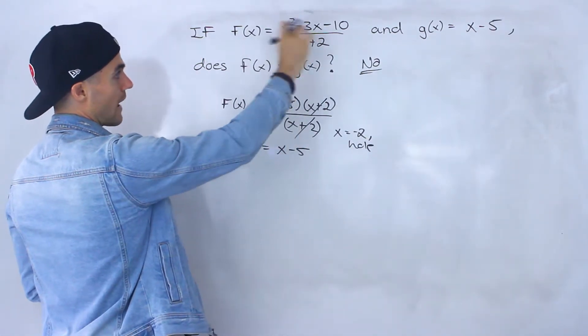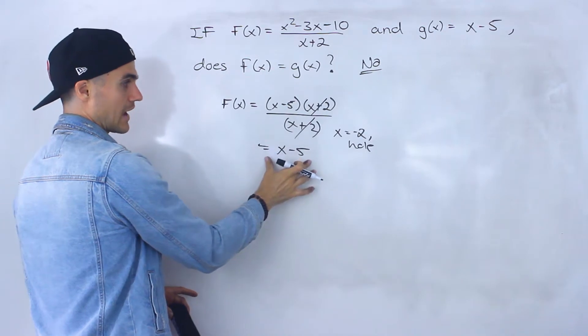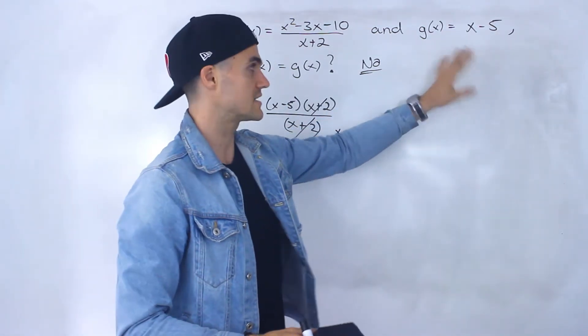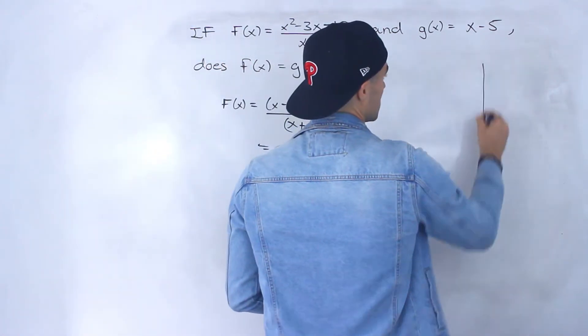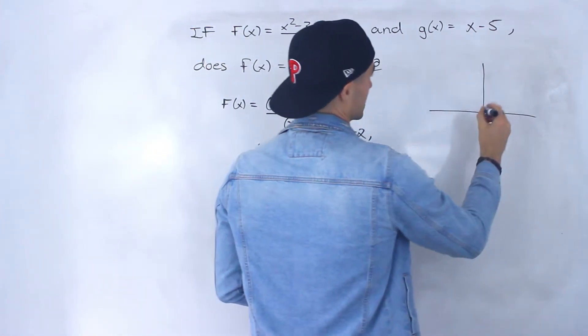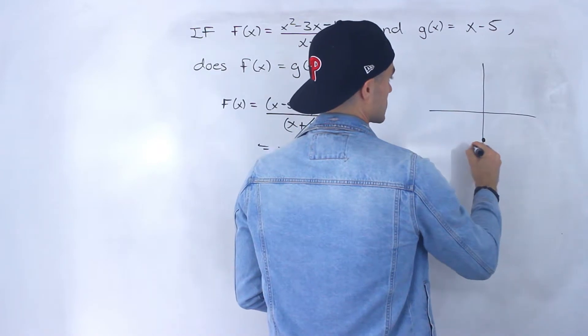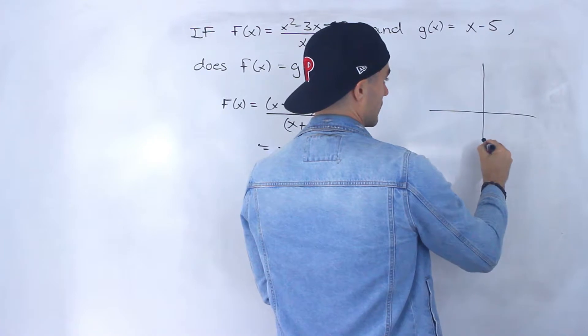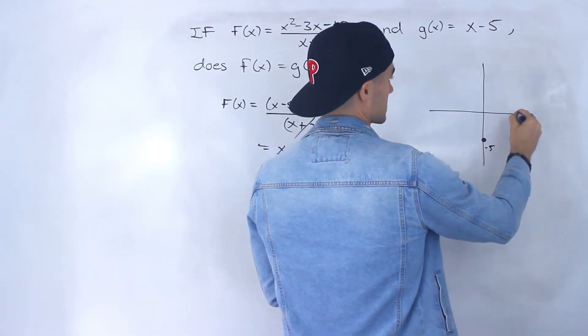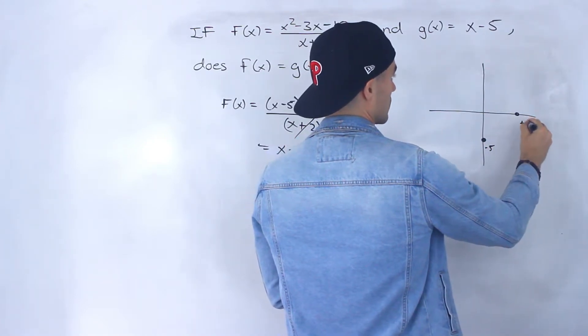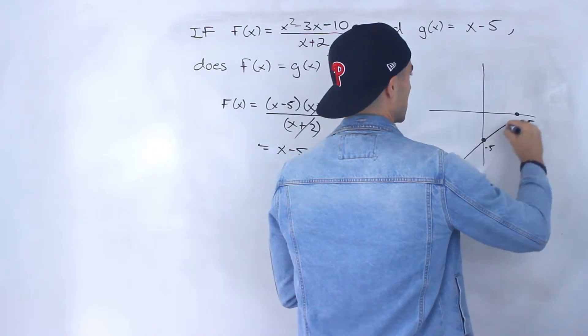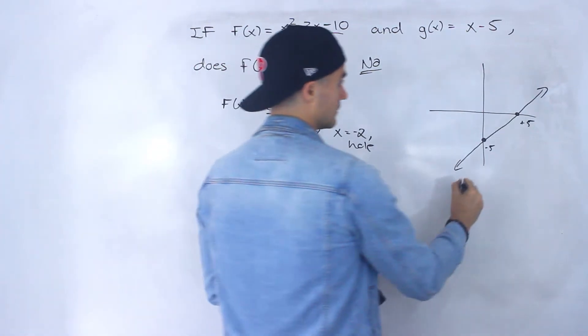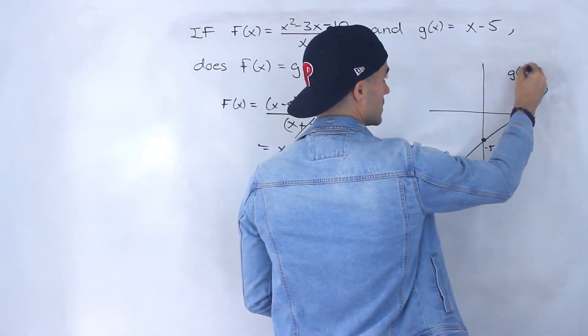So this graph is a line with a hole at x = -2, while this line doesn't have any holes. If we graph both of these, g(x) = x - 5, let's do a rough sketch. It has a y-intercept of -5 and an x-intercept of +5, so that's just going to be a line like that. There's no break in that line.